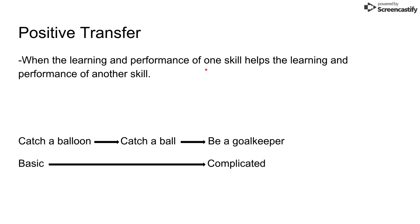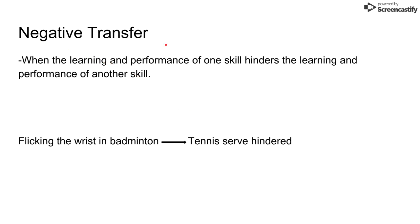The first type is positive transfer. This is when the learning and performance of one skill helps the learning and performance of another skill. A perfect example of this is going from catching a balloon, which helps you to catch a ball, which then helps you to become a goalkeeper. So this is where you have the transfer of a basic skill at the start going to a complicated skill at the end — starting off at the basic level with catching the balloon, and as you work your way through with enough practice and enough grooving of the skill, you potentially become a goalkeeper.